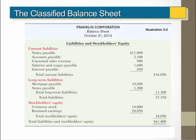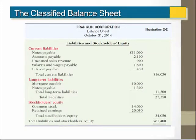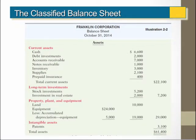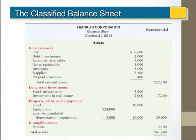Here is the liabilities and stockholders' equity section of the balance sheet. Notice we use the same formatting as the asset side. Also, take a look at the total liabilities and stockholders' equity total of $61,400. This total is the same as the total assets side — notice at the bottom, total assets also equals $61,400. So the accounting equation of assets equal liabilities plus stockholders' equity is in balance.